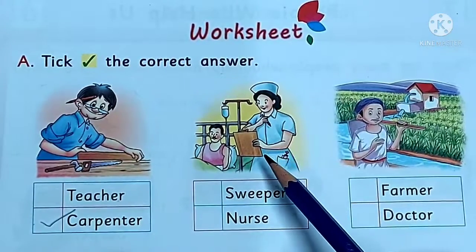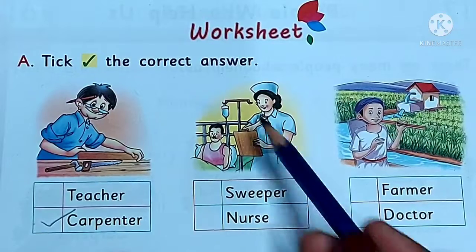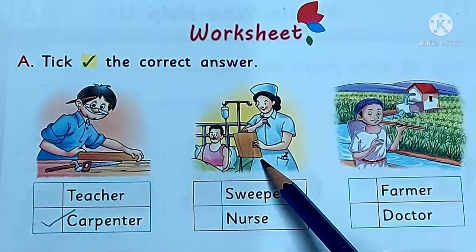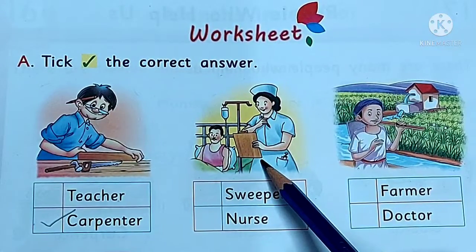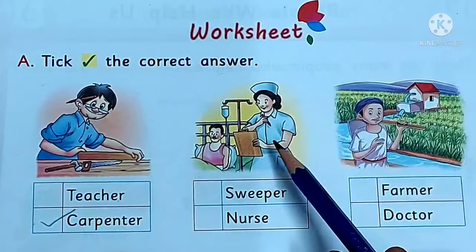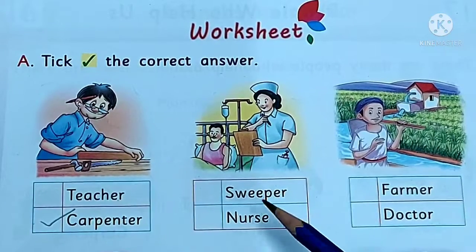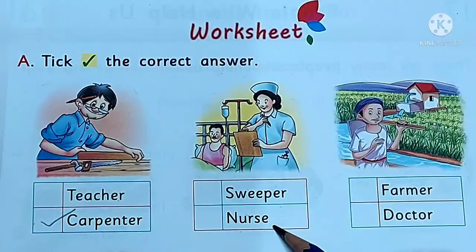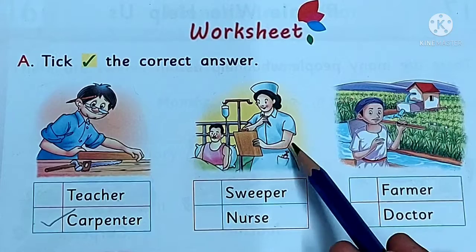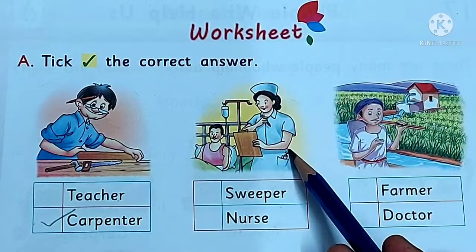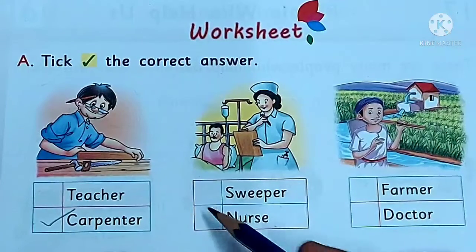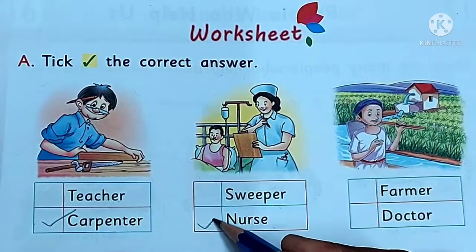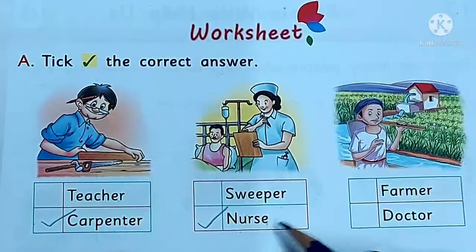Then next, see the picture. Who is she? She is a sweeper or nurse? Who is she? She is a nurse. Number two: nurse.